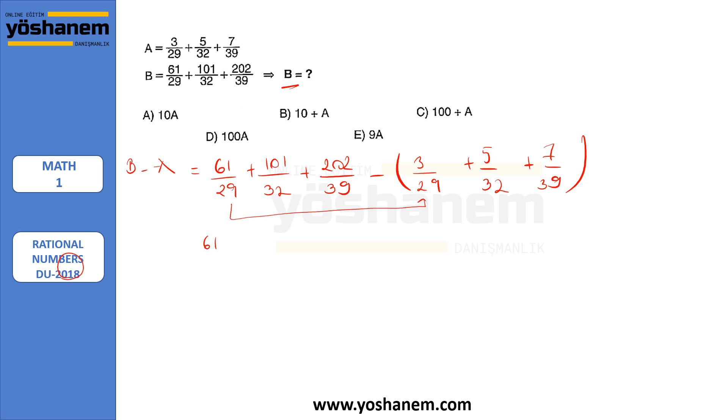So it's easy to subtract if they have the common denominators. So 61 over 29 minus 3 over 29 plus 101 over 32 minus 5 over 32 plus 202 over 39 minus 2 over 39. So this is 58 over 29 plus this one is 96 over 32 plus this is 195 over 39.